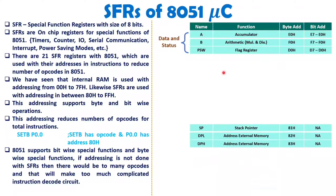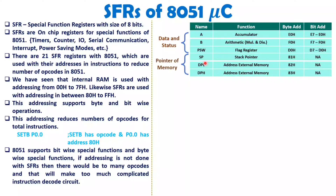For other Special Function Registers: the Stack Pointer is not bit-addressable, so remember that. We also have DPTR, which is split into DPL and DPH — DPL holds the lower address and DPH holds the higher address of external RAM. The Stack Pointer points to internal RAM addresses, while DPTR as a 16-bit register points to external RAM addresses.